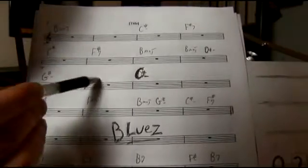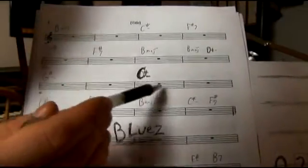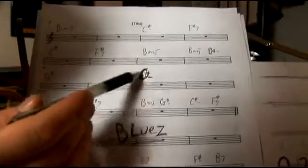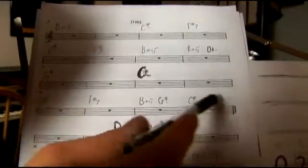Then we go to six for two measures here. Then two for two measures here. I kind of messed up there. It's a C sharp minor. That's our two minor for two measures.